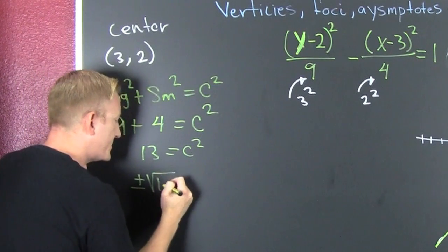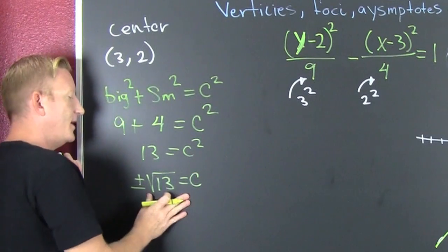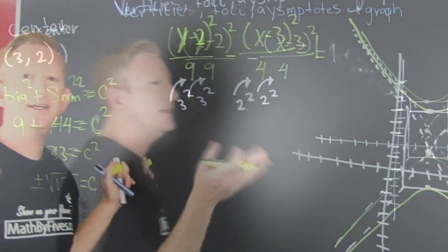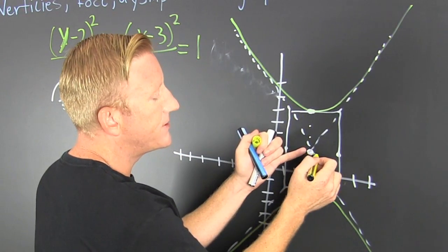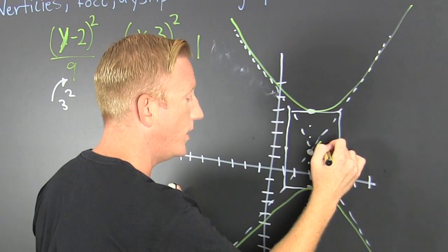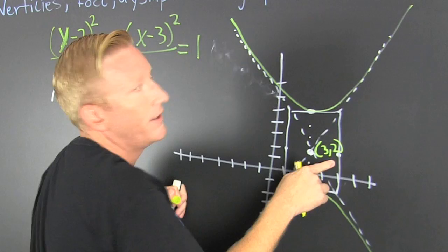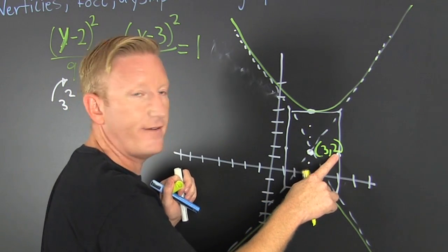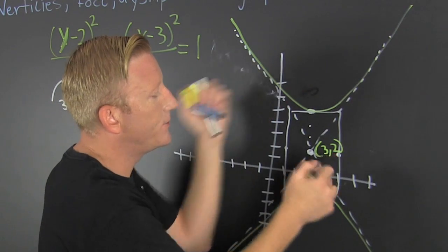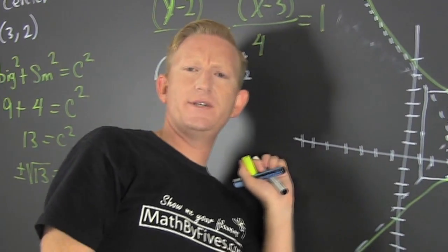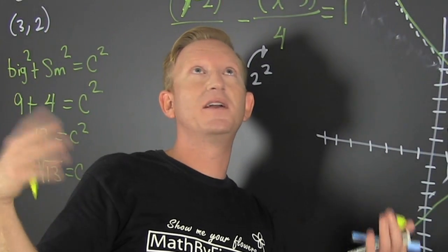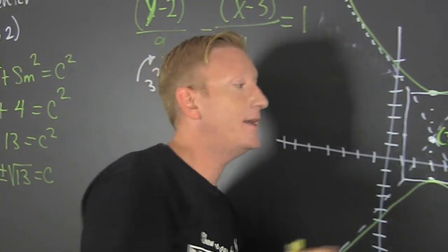We take the square root of both sides: c = ±√13. Now what do we do with c? We add and subtract it from our center — but not the x component. We add and subtract it from the y value. √13 is a little bigger than 3, smaller than 4 — about 3.6.